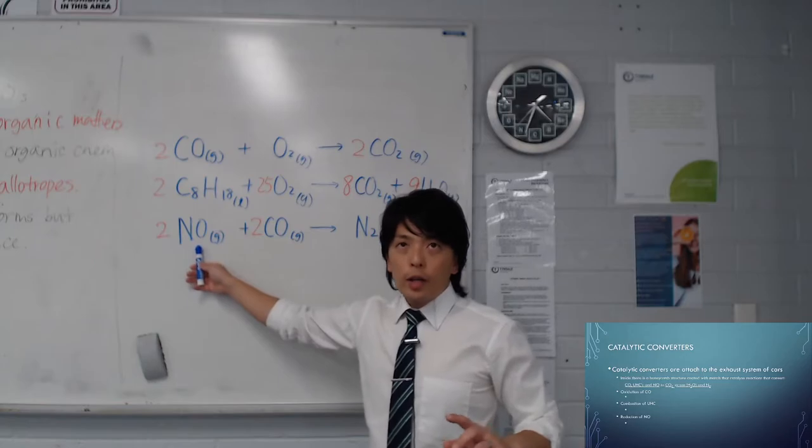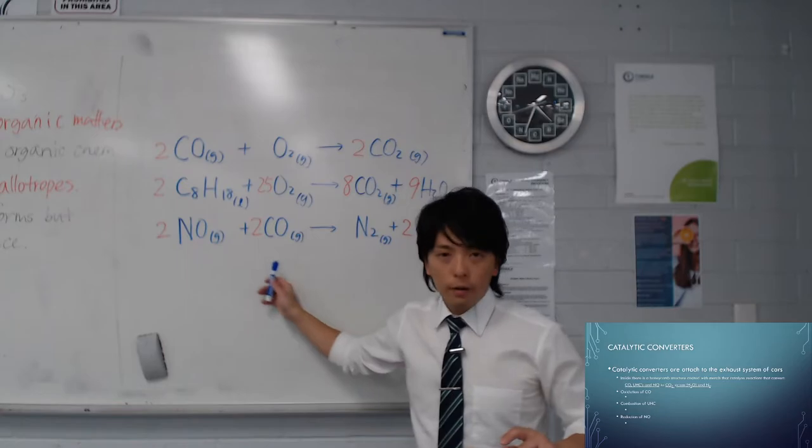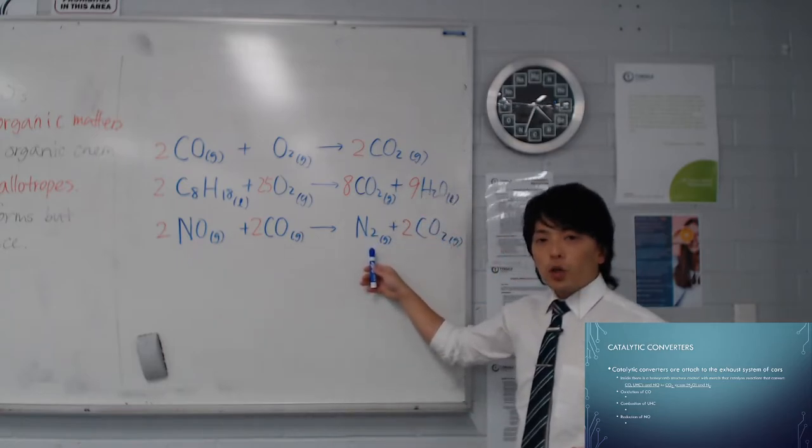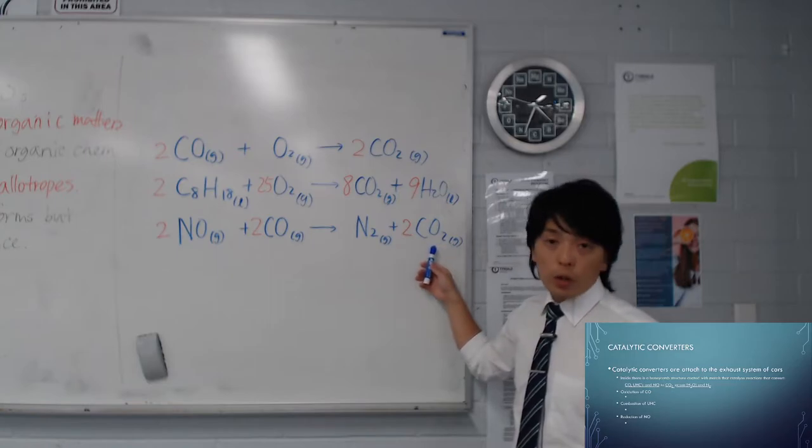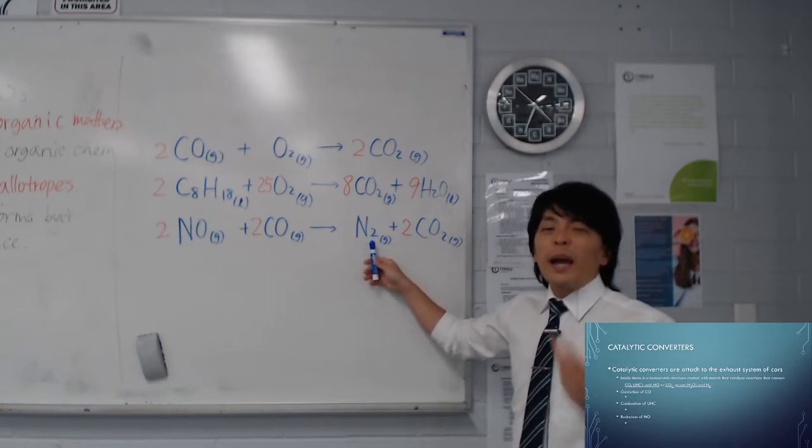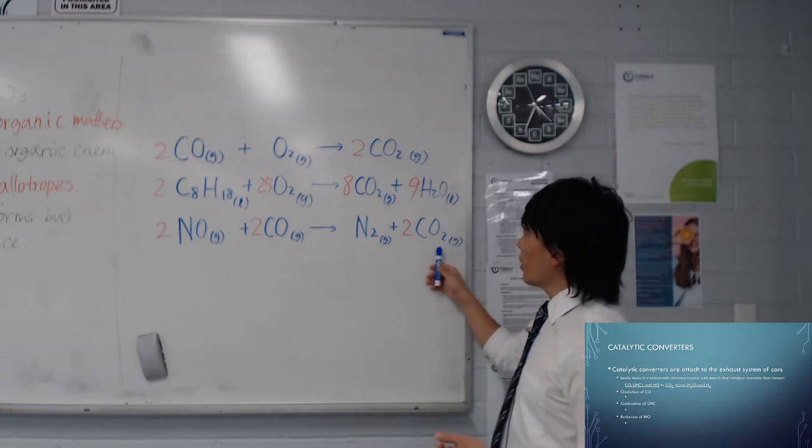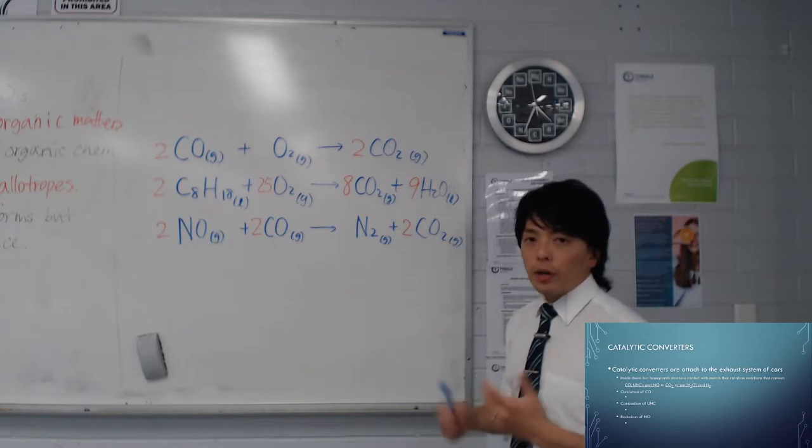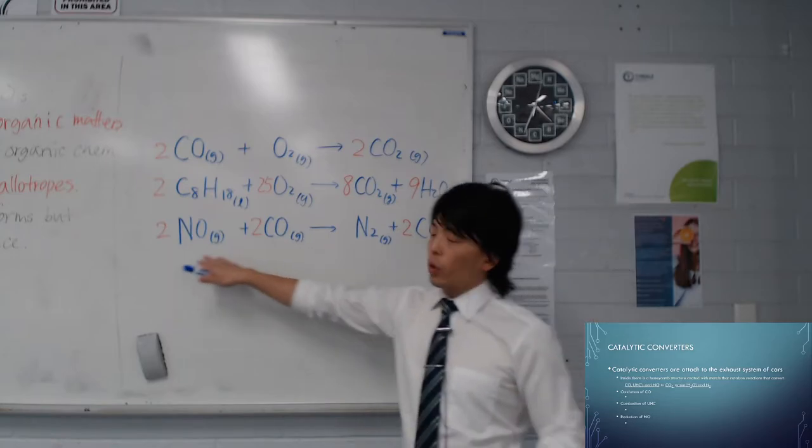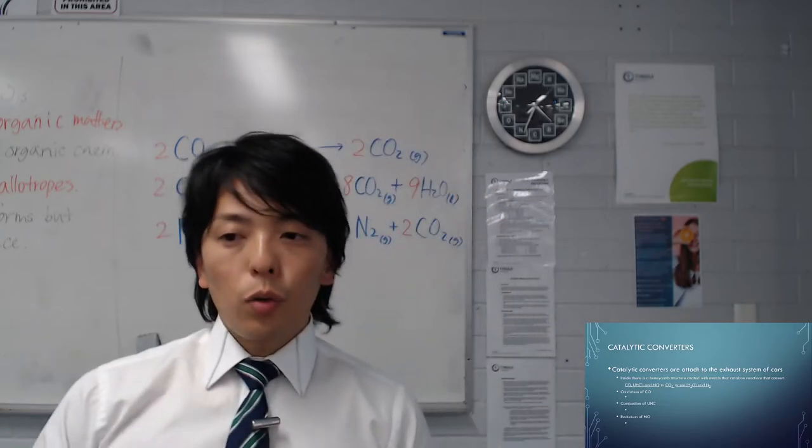But if there was catalytic converter, NO nitric oxide and carbon monoxide can bond with each other. Both are harmful, but can be converted into nitrogen N2 and also CO2 gas. Nitrogen gas, I mean 80% of air that we breathe in is nitrogen gas. And carbon dioxide is less harmful compared to carbon monoxide or nitric oxide. So there you go. That's the conversion that it can do.